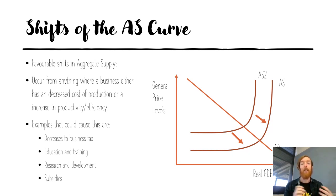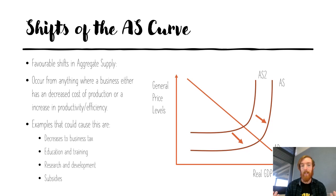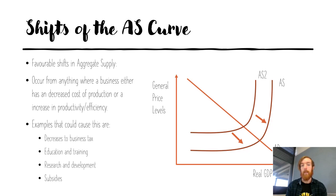There can also be a favorable shift from education and training — the perfect example for aggregate supply. When you educate and train your workers, you're hoping they'll be more efficient and produce more per hour worked. If they're producing more per hour, you get more productivity and more production overall, so you can afford to produce more at a lower price and better supply society. Research and development is another one — if successful, it leads to businesses being more productive and finding new ways to produce more with the resources they have.